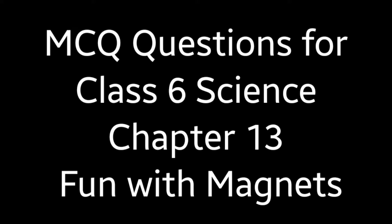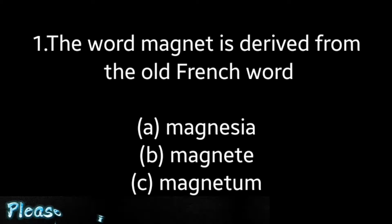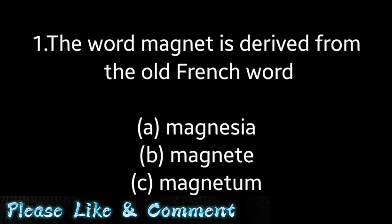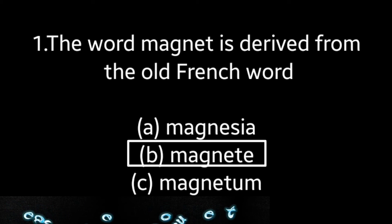Today we are going to be discussing the MCQ questions for Class 6 Science Chapter 13: Fun with Magnets. Question number one: the word magnet is derived from the old French word — magnesia, magnet-a, or magnetum? Answer is option B: magnet-a.